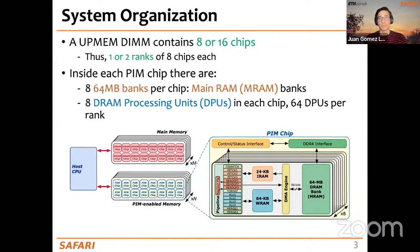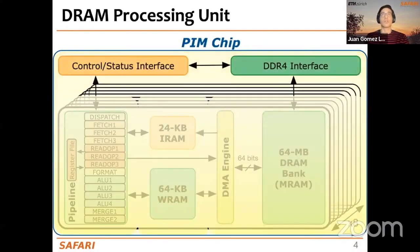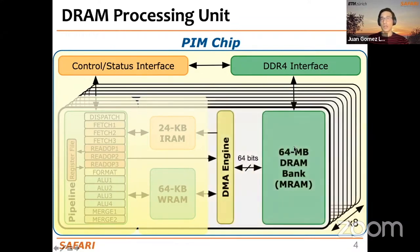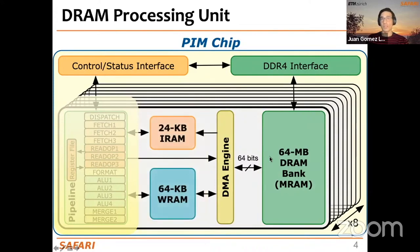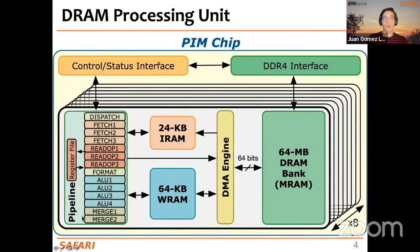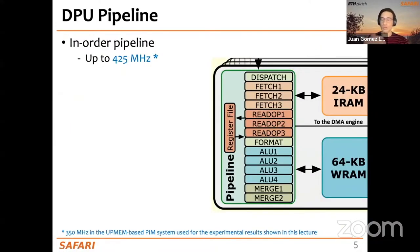Each DPU can access one MRAM bank. If we take a closer look at the internals of the PIM chip, we find the control and status interface for the CPU to communicate with the pipeline of the DPU. We also have a DDR4 interface for the CPU to access the DRAM banks. The current most powerful version of the UPMEM PIM system has DPUs that can run at a frequency of 425 MHz.